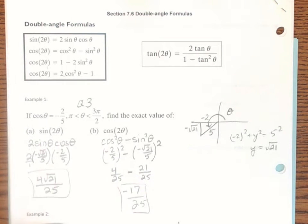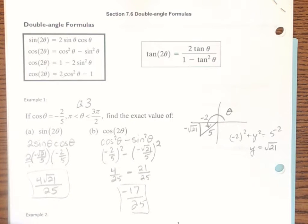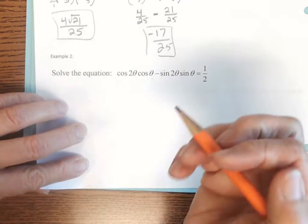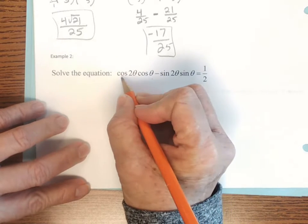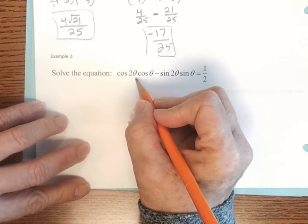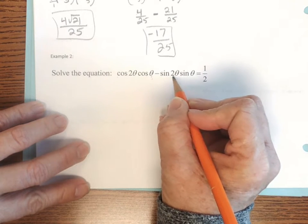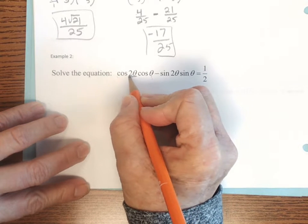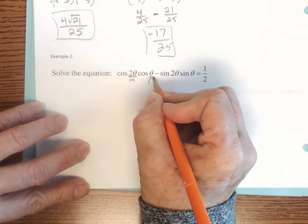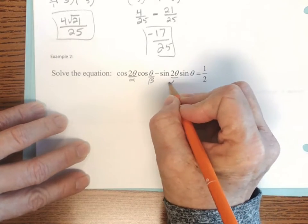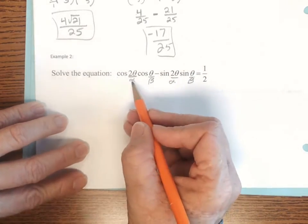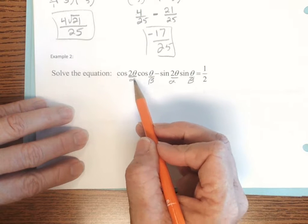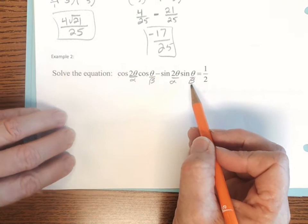Those are the answers for sine of 2 theta and cosine of 2 theta. Now let's move on to the next example. Here we're going to apply some things from the last section as well. We have cosine 2 theta times cosine of theta minus sine 2 theta times sine theta equals 1 half, and we need to solve it. I'll treat 2 theta as alpha and theta as beta, and look for the matching sum and difference formula: cosine alpha times cosine beta minus sine alpha times sine beta.